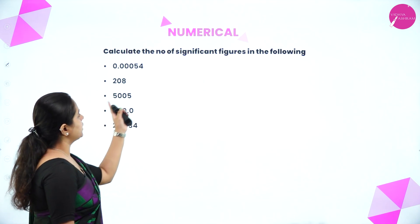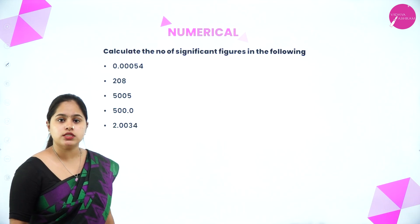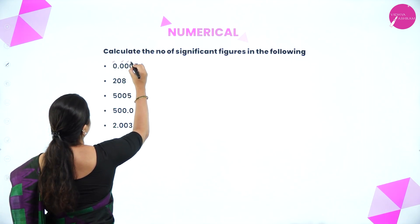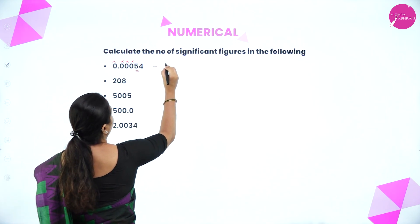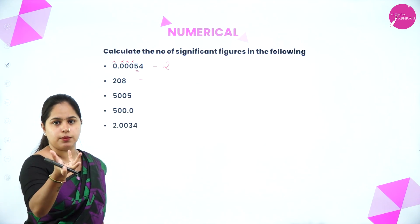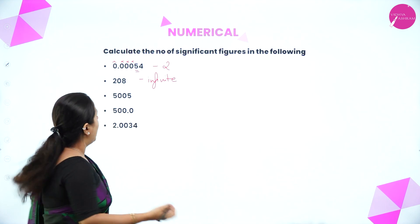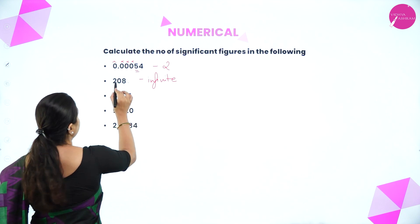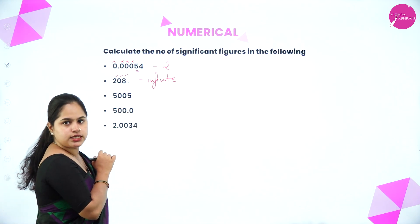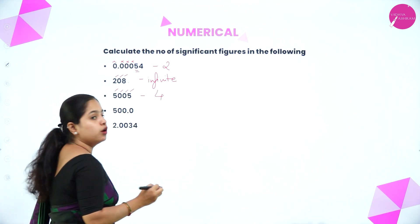Let's calculate the number of significant figures in some examples. First, 0.00054: zeros preceding the first non-zero digit are not significant, so only 5 and 4 are significant — two significant figures. Second, 208: if it is an exact number, it has infinite significant figures; if a decimal point is present, all three digits are significant. Third, 5005: zeros between two non-zero digits are significant — all four digits are significant. Fourth, 500.0: the zero after the decimal point is significant — four significant figures.